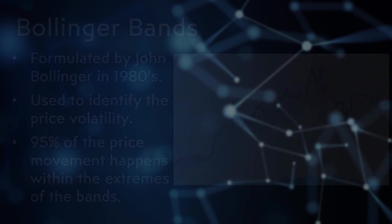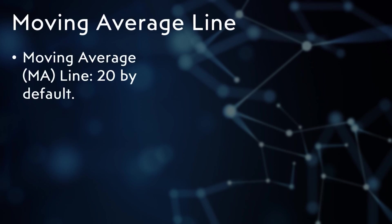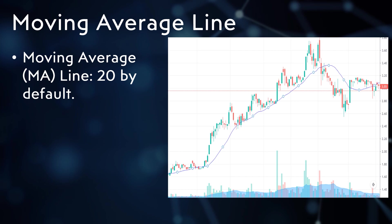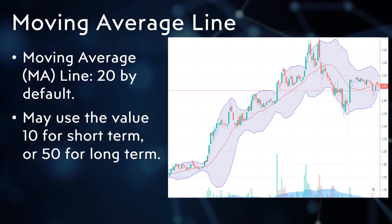A Bollinger Band has three components. The first component is the middle line, which is simply the 20-day moving average. In this chart, you can see that the 20-day moving average is identical to the middle line. The trader can choose the value of the MA according to preference — for short-term traders, a 10-day MA is preferred.